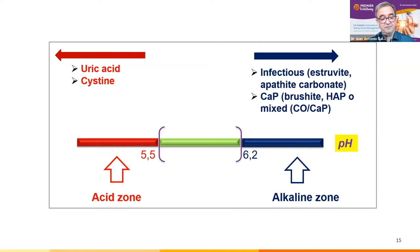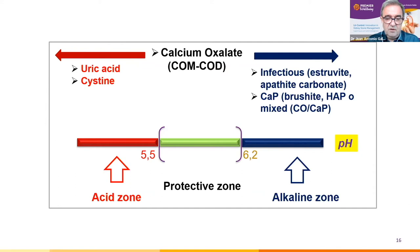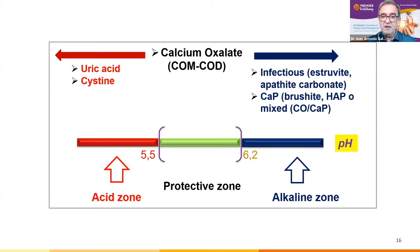Whenever urinary pH is in what we could call the protective or non-lithogenic pH range — that's between 5.5 and 6.2 — and always in supersaturation conditions, calcium oxalate stones, both monohydrate and dehydrate, can form normally by heterogeneous nucleation. The initial core of the stone being either uric acid or calcium phosphate, depending on whether the pH of the urine is nearer to one or another extreme pH level.